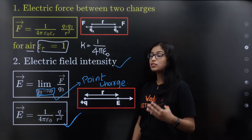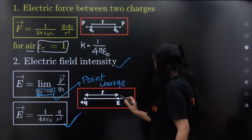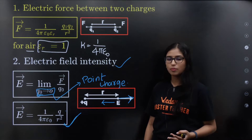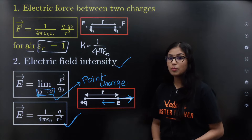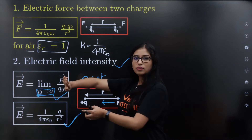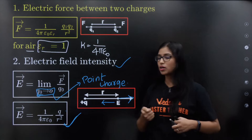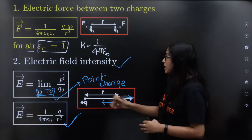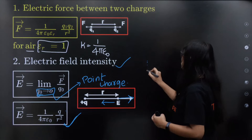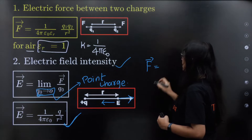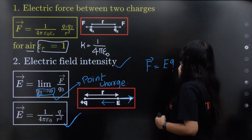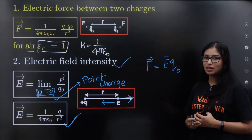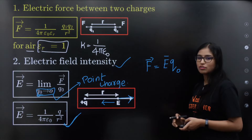Electric field is either outward or inward — we can take the direction in both directions. Electric force can be written as q into E. That means F equals E into q₀. So this is our electric force formula.